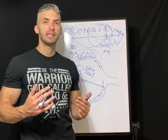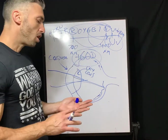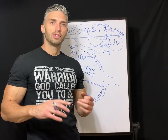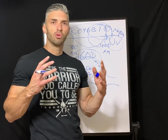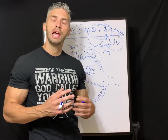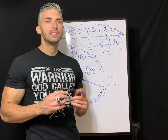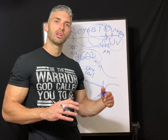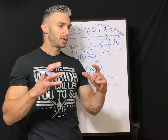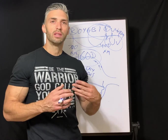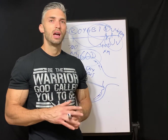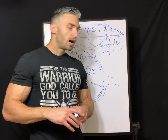Scotopic vision is our night vision — our rod cells become more perceptive in nighttime or dimly lit conditions. Green is the easiest color to perceive during scotopic vision, and a good way to remember that is night-scope binoculars, which always display in green, because green is the easiest for us to see at night.